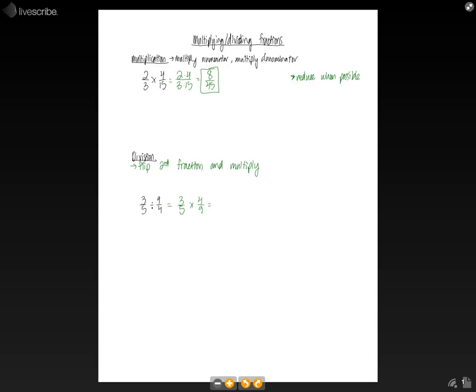So now we're back to just plain multiplication, which will be 3 times 4 over 5 times 9, which will give us 12/45.